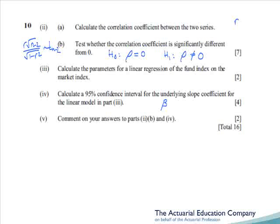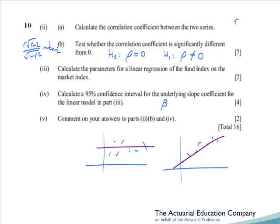Part four asks us to calculate a 95% confidence interval for the underlying slope coefficient, i.e. beta. The result is in the tables and this will be no problem at all for well-prepared candidates. We finish with a comment comparing 2b — where we showed the correlation coefficient is different from zero — with part four's confidence interval for the slope. If there's no correlation the slope would have a gradient of zero, but here with positive correlation the slope will be positive, so you'd find the confidence interval didn't contain zero but contained two positive values. Our results tie up.